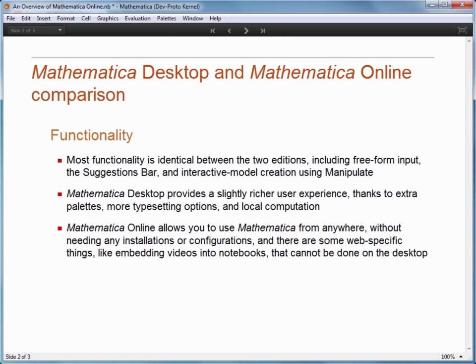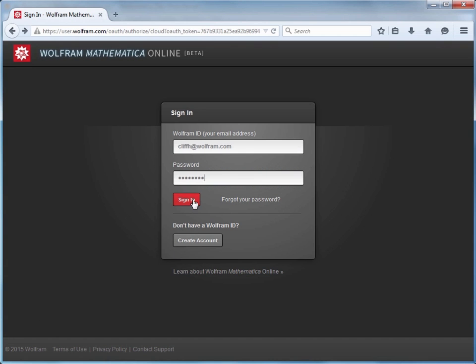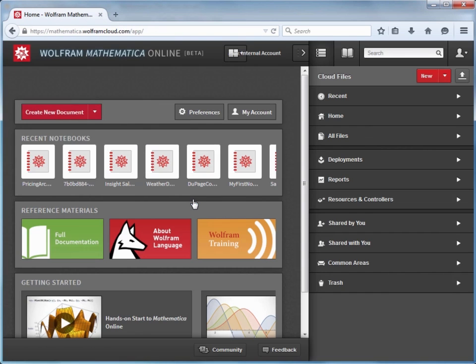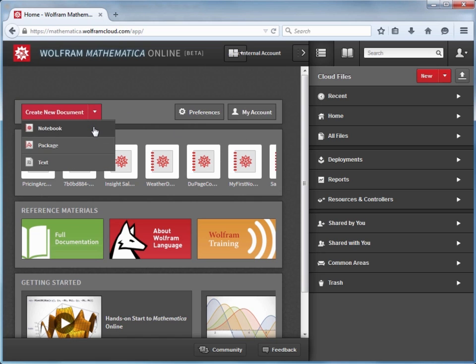But first, let's take a look at Mathematica Online's workflow. We'll begin by opening the web browser, navigating to the Mathematica Online login screen, and entering our account information. When you first launch Mathematica Online, you should see the welcome screen. From here, you can create a new notebook, access resources for getting started, and browse the files stored in your Wolfram Cloud account by using the file browser. If you have a Mathematica Online account, you'll get a certain amount of cloud storage where you can store your notebooks and related files, and you can also purchase additional storage if needed. Let's go ahead and create a new notebook by clicking Create New Document and selecting Notebook from the drop-down menu.